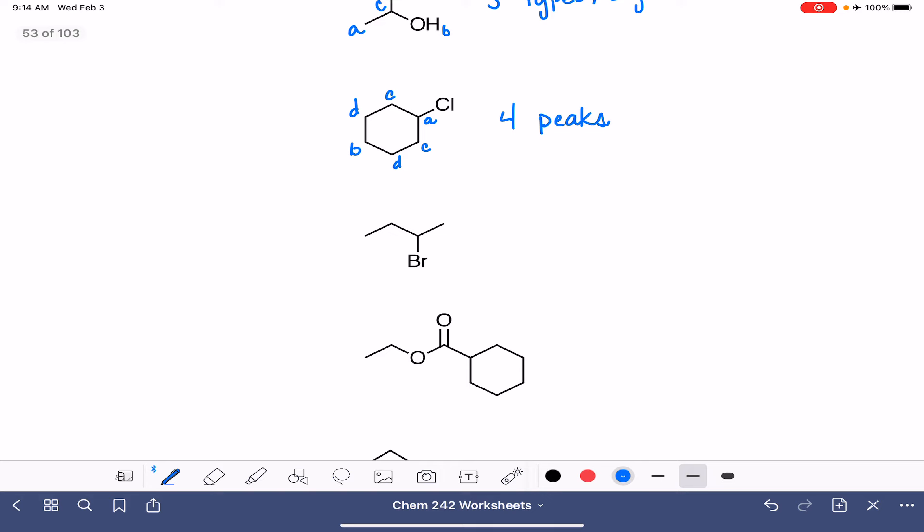I'm using all different kinds of notation here. For our next example, when we're looking for a plane of symmetry, there is none in this molecule. And that just simply means that all of these hydrogen atoms are unique. So this one is also going to have four peaks.